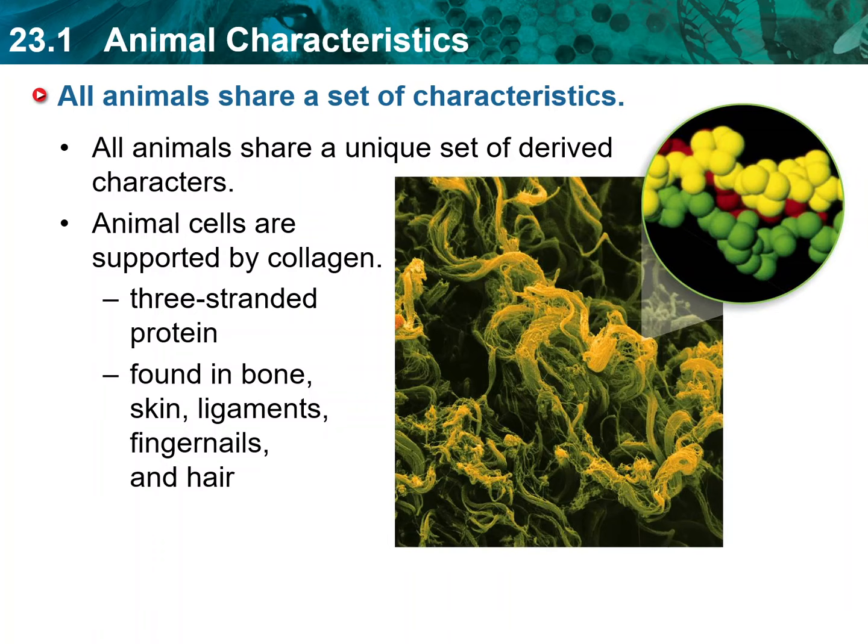Second main idea: All animals share a set of characteristics. Given the huge physical diversity among animals, what characteristics distinguish animals from other organisms? All animals share a set of derived characters, or heritable features, that set them apart from other eukaryotes. These characteristics suggest that all animals are the descendants of a single common ancestor.